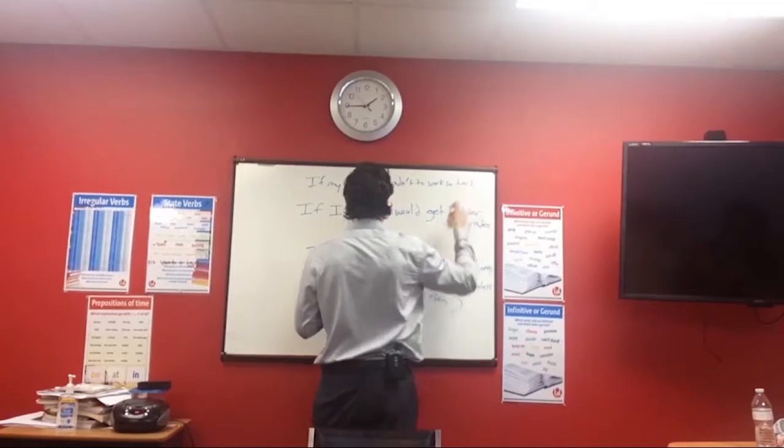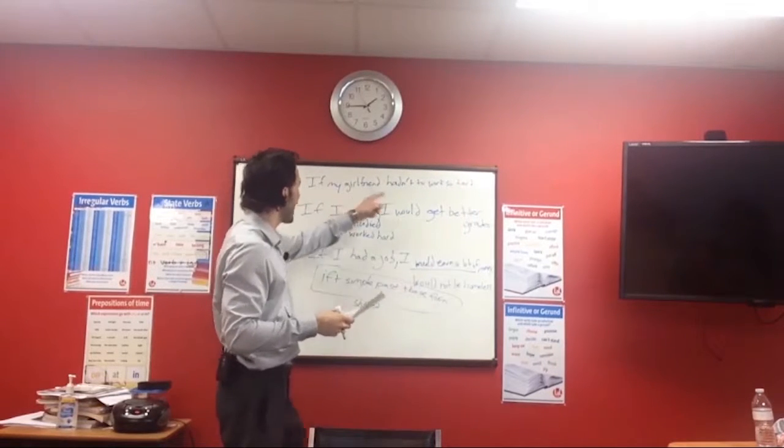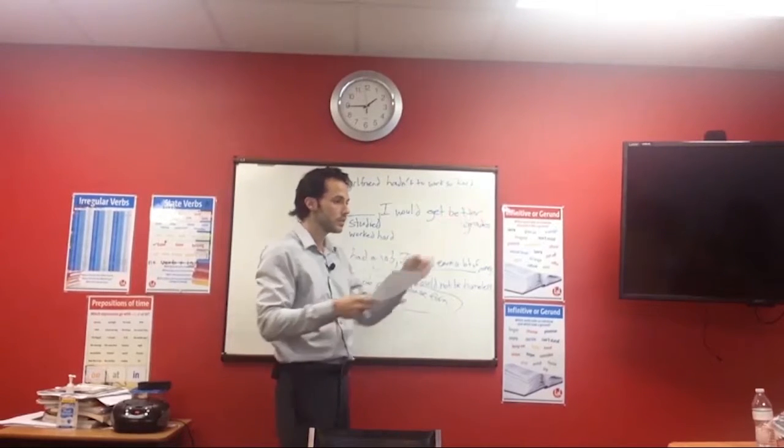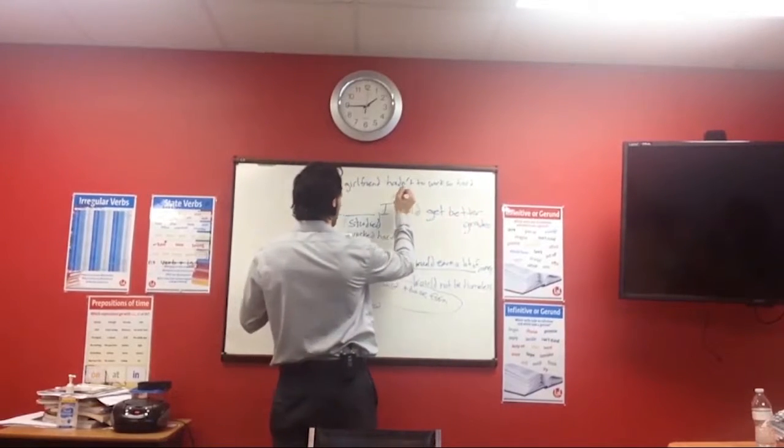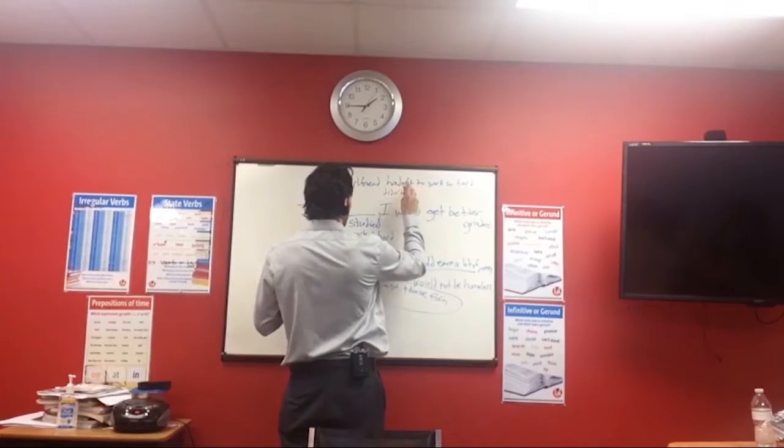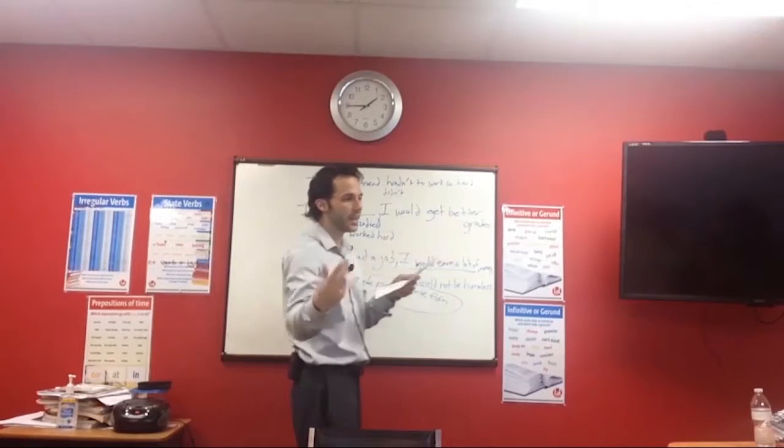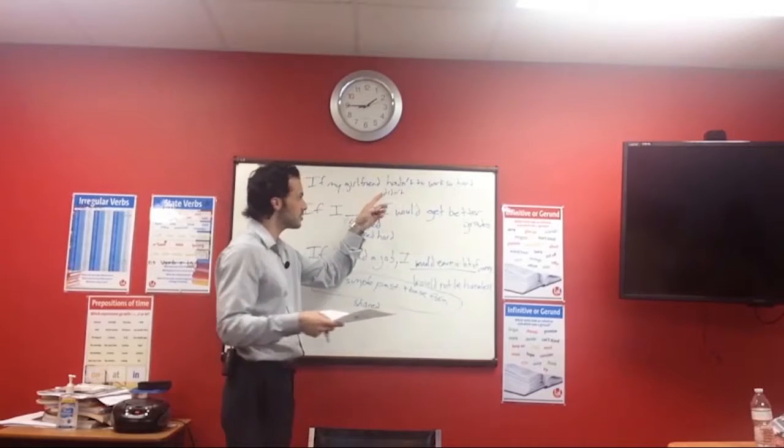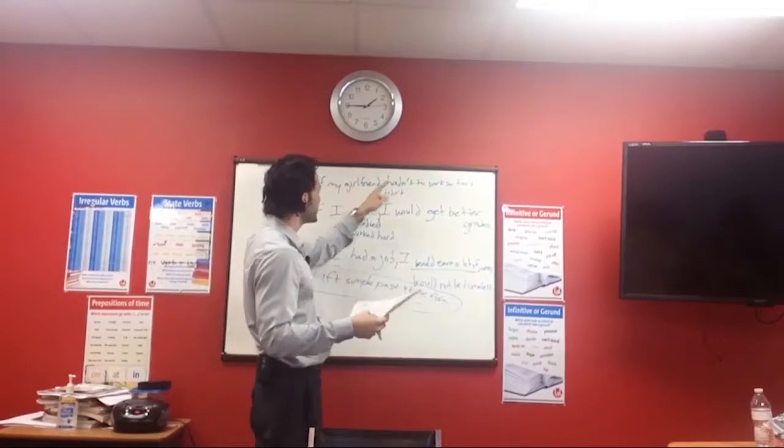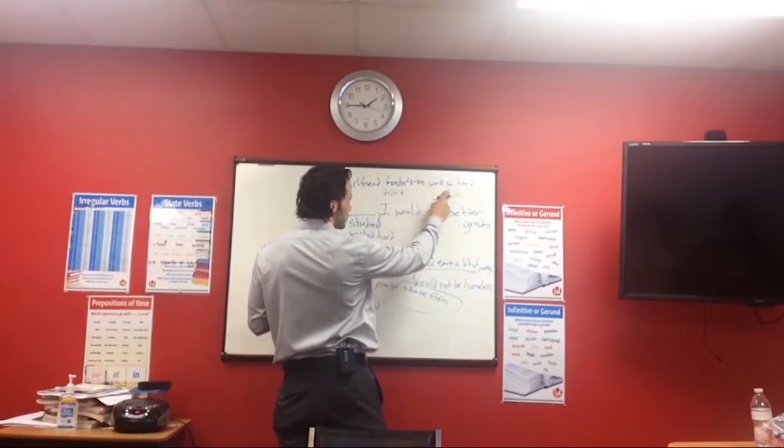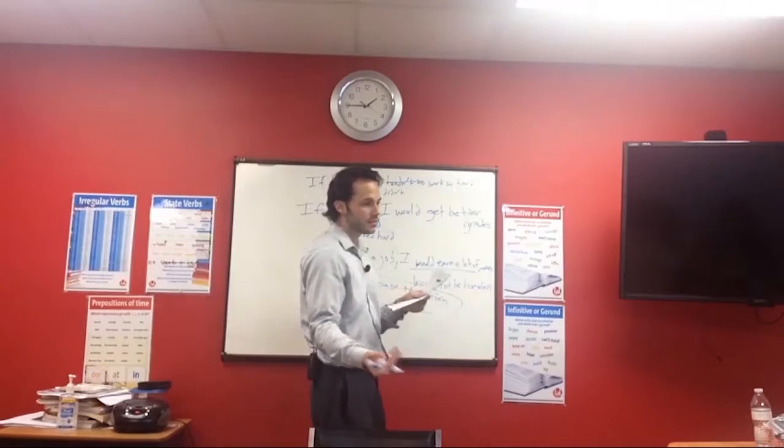So if my girlfriend hadn't to work so hard, what is the difference between didn't, had to, and hadn't to? Because when we start adding the hadn't, had, been able to, we are getting into perfect tenses. This is simple past, so didn't. So if my girlfriend didn't, and we don't need this, just if my girlfriend didn't work so hard, did not, right?